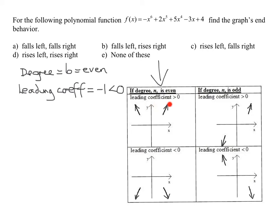Since the leading coefficient is negative and the degree is even, both ends are going to point down — that's my end behavior. Now we just have to figure out which answer choice matches. Looking at the answers: falls left, falls right. Does this one fall to the left and fall to the right? Yes. B says falls left, rises right — this graph doesn't rise at either end. So the answer is A.